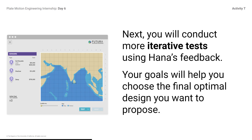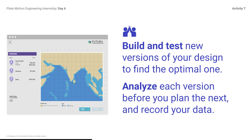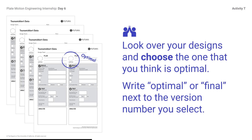Remember, you have limited time to plan and test new designs. Build and test new versions of your design to find the optimal one — analyze each version before you plan the next, and record your data. Navigate to the Tsunami Alert design tool and return to iterative testing. View the Tsunami Alert data sheet and remember to record each new version's test results. Look over your designs and choose the one that you think is optimal — write 'optimal' or 'final' next to the version number you select. If you need to, continue testing after hours, but you should have identified an optimal design by the next work day.